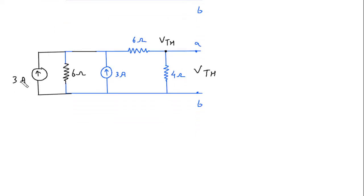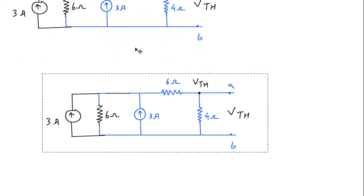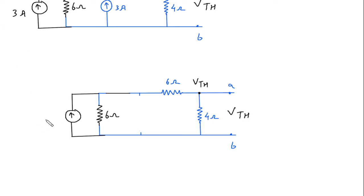Now as we can see that this 3 ampere and 3 ampere are in the same direction, so they will get added, giving 3 plus 3 equals 6 ampere.